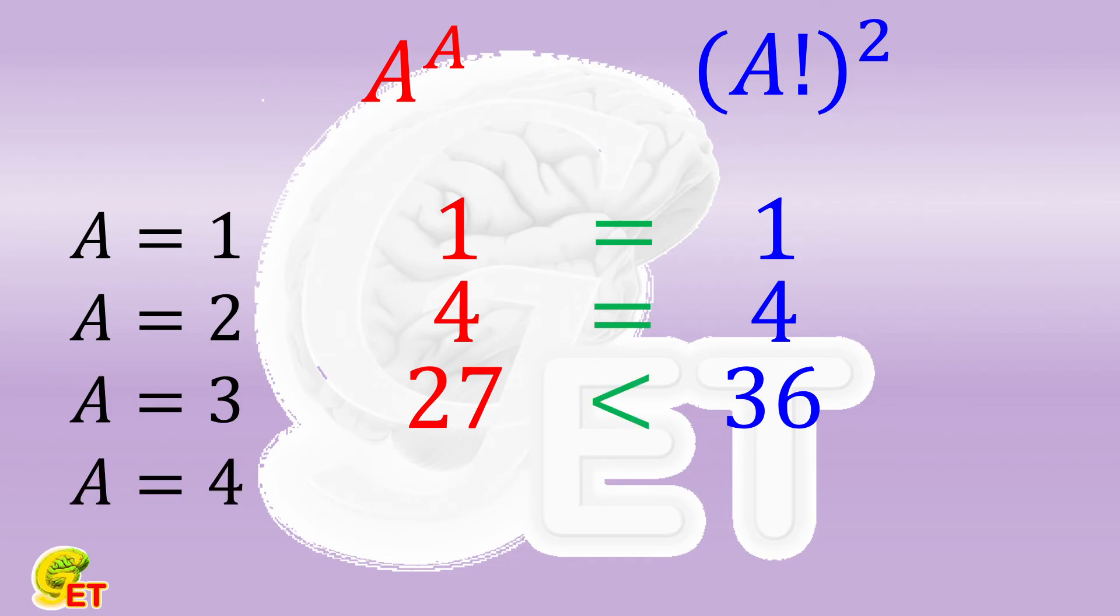When A is equal to 4, the left side is 256, the right side is 576, and the right side is still bigger.